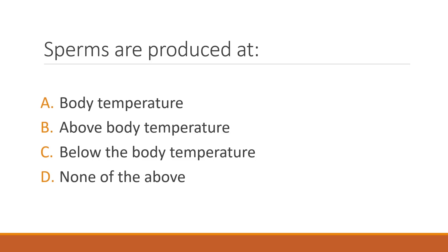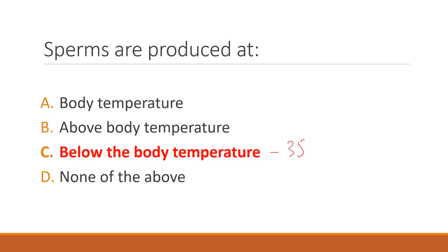Question number one: sperms are produced at which temperature? The given options include high speed reduction area, below body temperature, or optimal temperature. The correct answer is that sperm production occurs at 35 degrees centigrade, which is below body temperature.